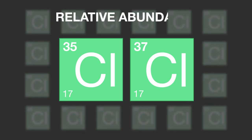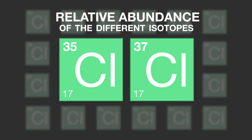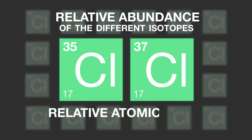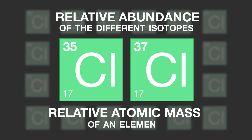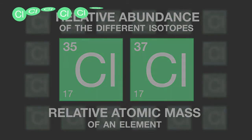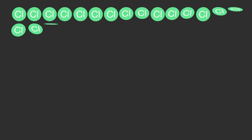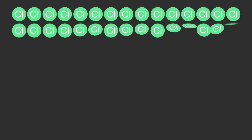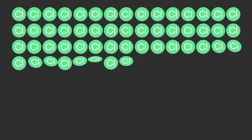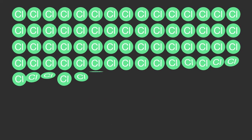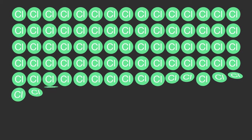The relative abundance of the different isotopes — in other words, how common they are — is always taken into consideration when calculating the relative atomic mass of an element. One way of visualising this is to imagine that you have a sample of 100 naturally occurring chlorine atoms.